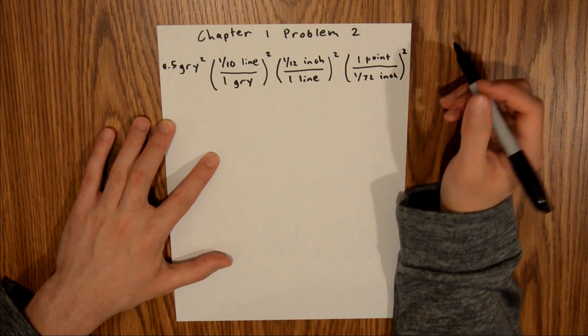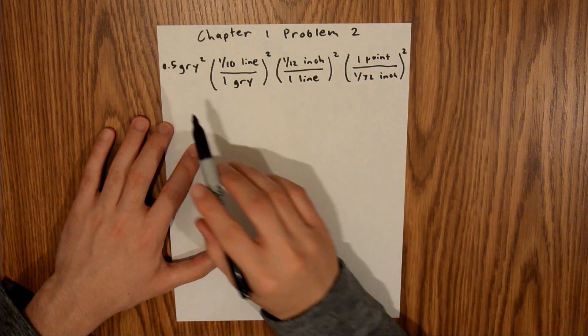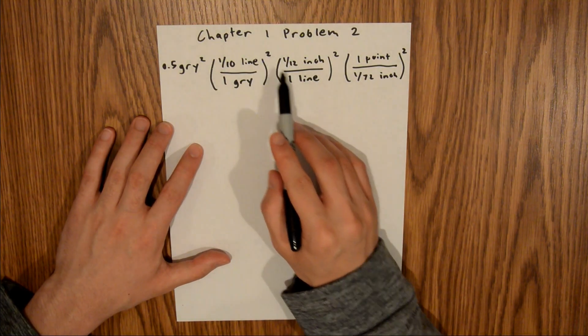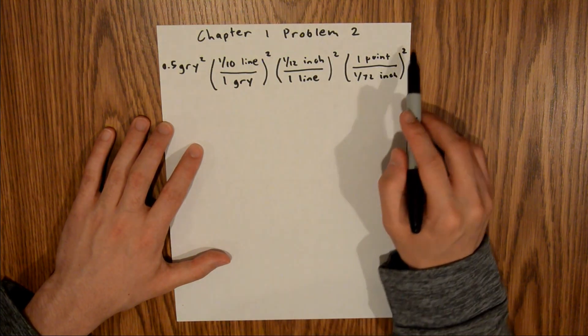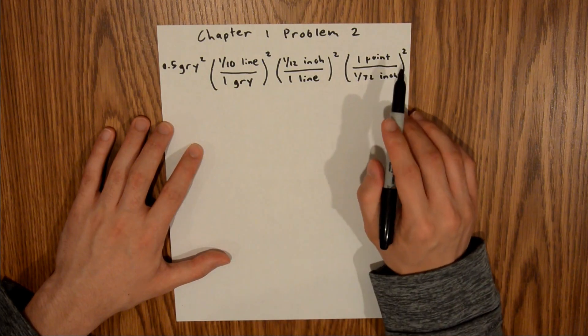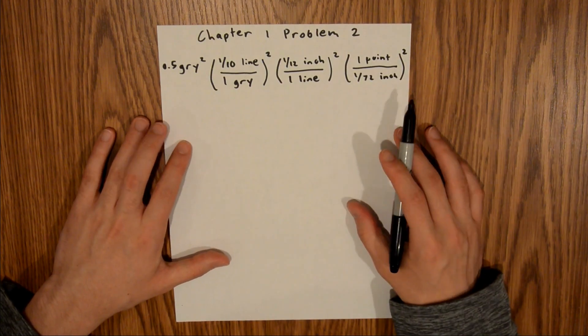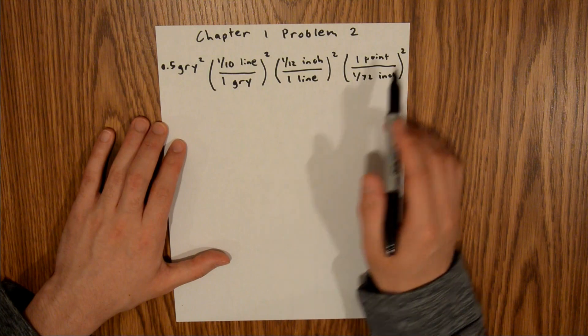This will allow all of our units to cancel out, because we have GRI squared with GRI squared, line squared with line squared, and inch squared with inch squared. So all those units will cancel out, except for point squared. In the problem, we were asked to convert from GRI squared to point squared, so all of this will work out.